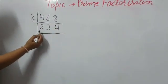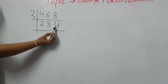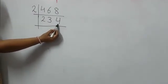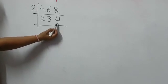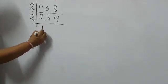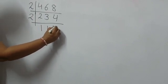Now once again, 234 is also an even number and the last digit is 4, which means it is divisible by 2. This gives us 117.